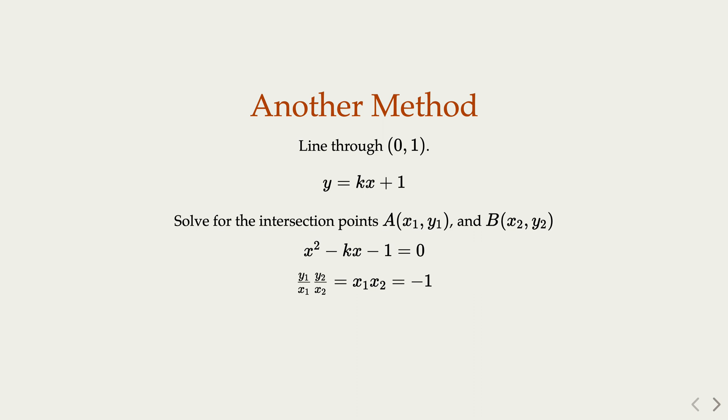So we know that this line, which goes through (0,1), when it intersects with the parabola, the two points satisfy that OA and OB are perpendicular with each other.